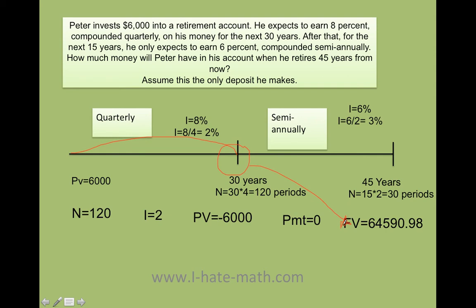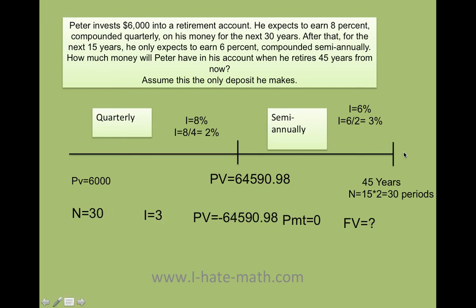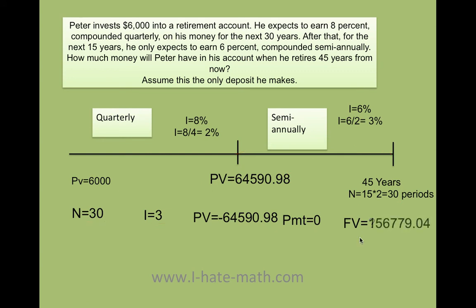Since I now have a different compound rate, I need to make my present value $64,590.98. We're going from year 30 to year 45, so I put it into my calculator. I only have 15 years left but compounding semiannually, so this is 30 periods. My rate is not 6% — it's 6 divided by 2, which is 3%. My present value — remember, any time you put it in the calculator, you need to put it as a negative, or you'll get an error. The present value is the future value from the last 30 years, which is $64,590.98. Payment is zero because there is no additional payment. And finally, I solve for my future value — and this is how much money Peter will have in 45 years from now.